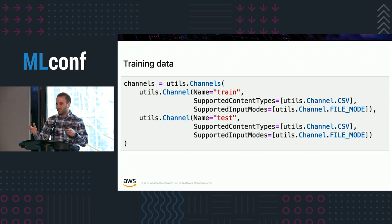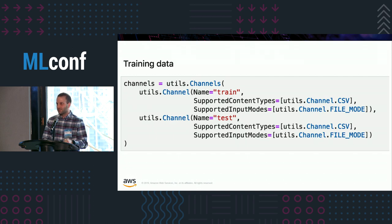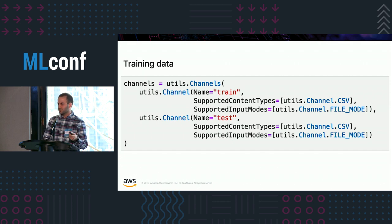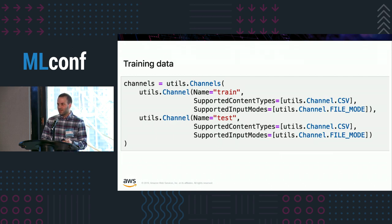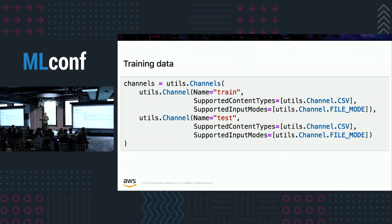Moving on to channels, which is your training data — you typically have a train, validation, and test split. You think about the supported data types: CSV for dense data, libSVM for sparse data, and so on, based on your customers' needs. You also think about whether your algorithm uses a file interface or a streaming interface. For large-scale machine learning algorithms where the data doesn't fit into a single machine's memory, whether that's a large number of samples or high-dimensional data, you think about implementing a streaming interface — which is what we use for most of our built-in algorithms. In this case, we have a train channel and a test channel, using CSV for dense data and file mode.